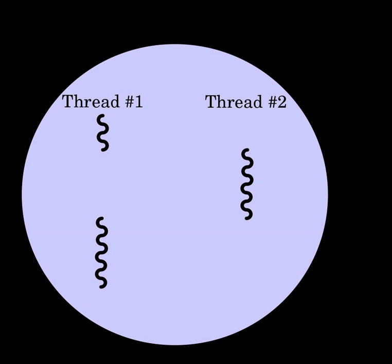Multi-threading is mainly found in multi-tasking operating systems. Multi-threading is a widespread programming and execution model that allows multiple threads to exist within the context of one process. These threads share the process's resources but are able to execute independently. The threaded programming model provides developers with a useful abstraction of concurrent execution. Multi-threading can also be applied to one process to enable parallel execution on a multi-processing system.